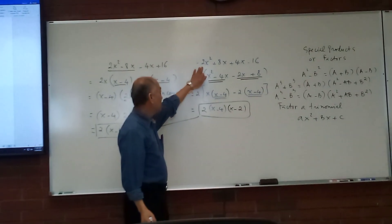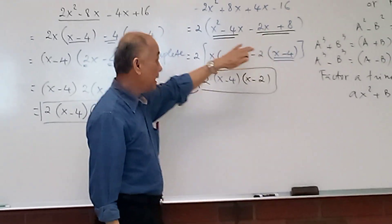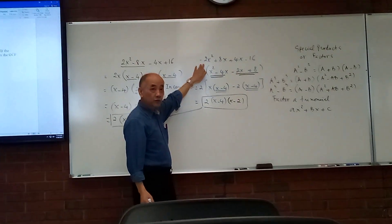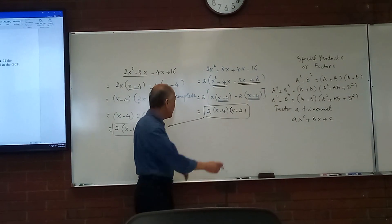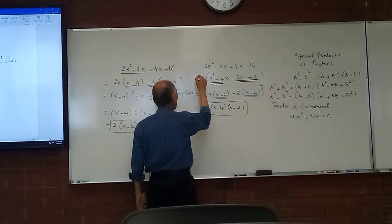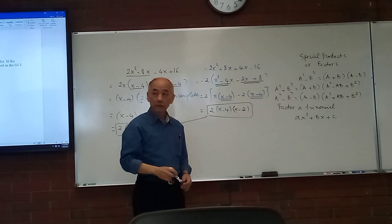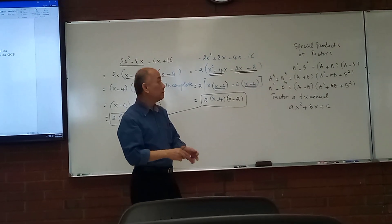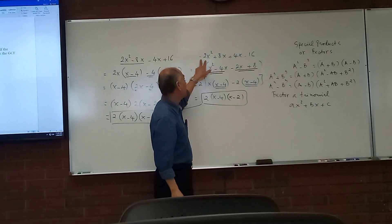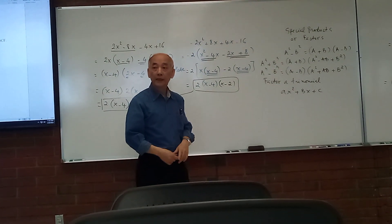So instead of 2, 8, 4, 1, 8, 16, the greatest common factor is 2. But since it's negative, you need to factor out negative 2, not positive 2. So if the first term, the higher degree term, is negative, then you need to include that negative.